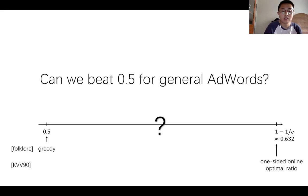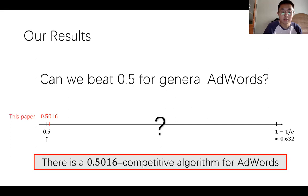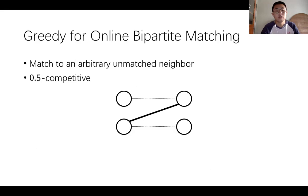So the most natural question is: can we beat the trivial 0.5 competitive ratio achieved by a simple greedy? Our paper answers the question on the positive end, and our main result is that we introduce a 0.5016 competitive online algorithm for AdWords.